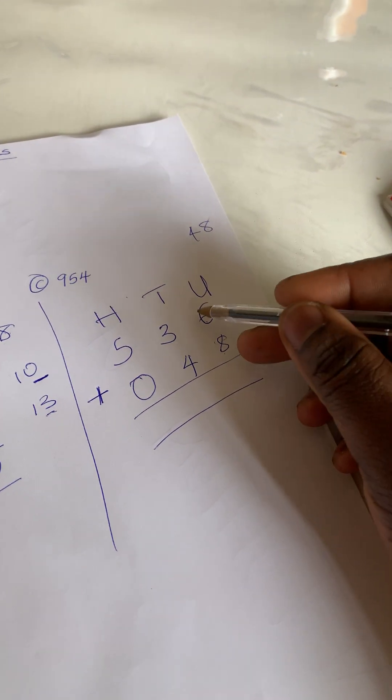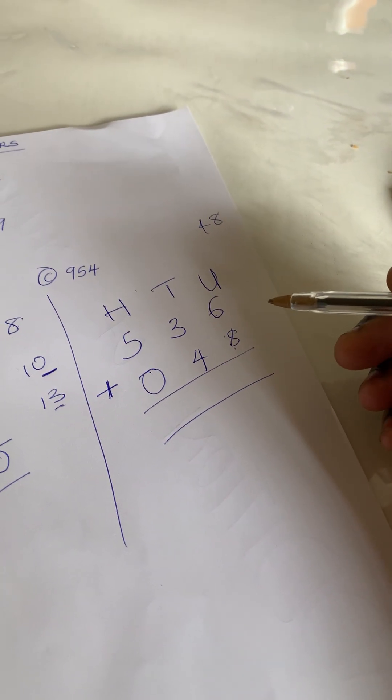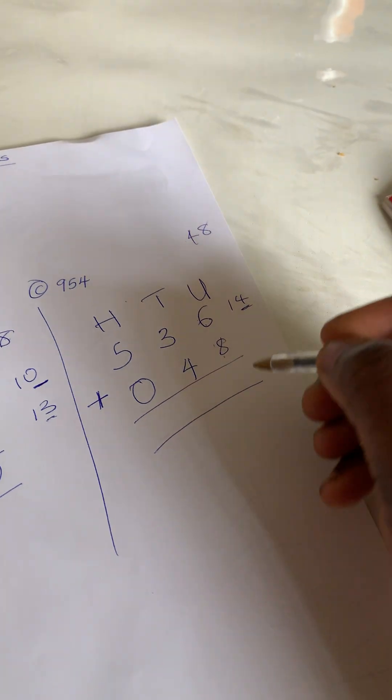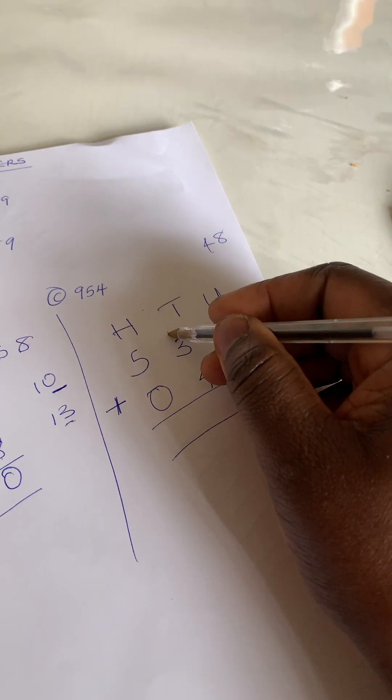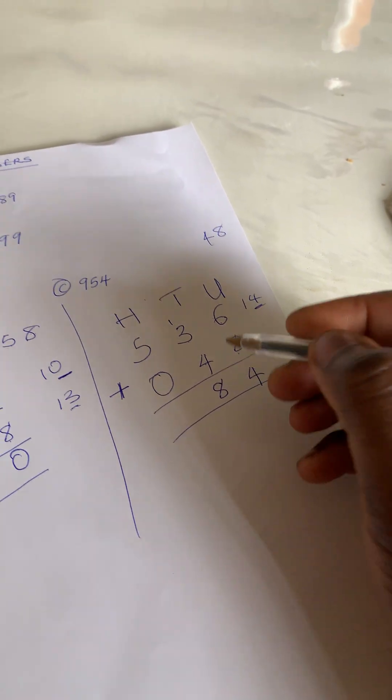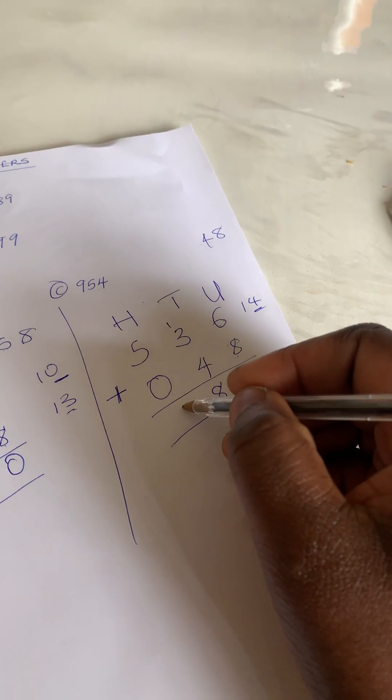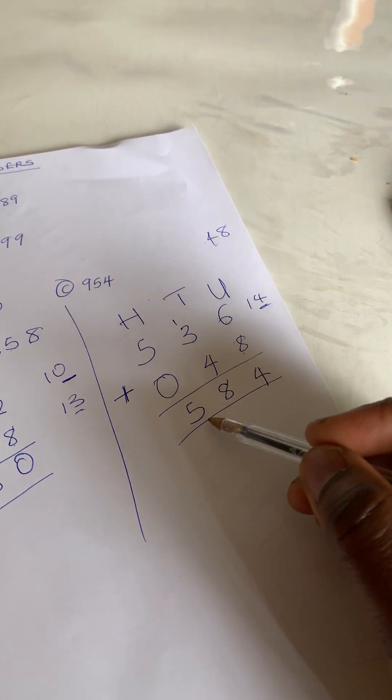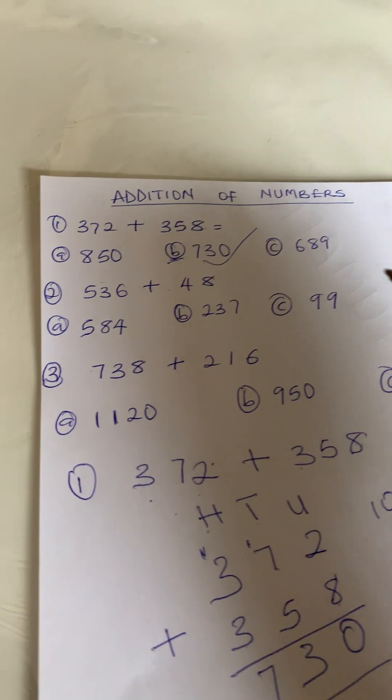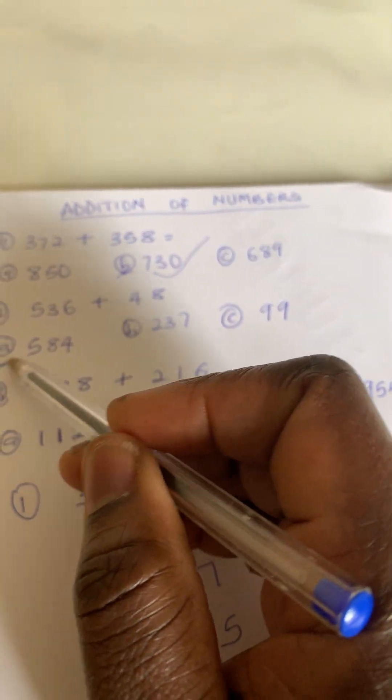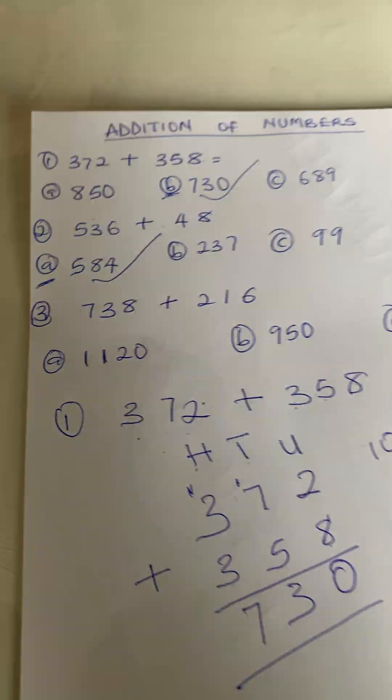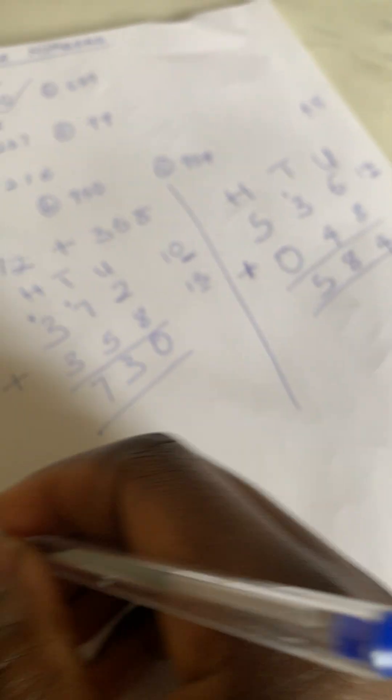8 plus 6 is 14. You write 4, carry 1. 1 plus 3 is 4, 4 plus 4 is 8. 5 plus 0 is 5. So the answer is 584. Let's check our options: a is 584. This is the correct answer.